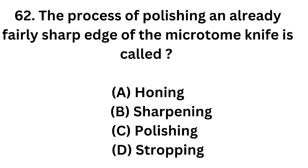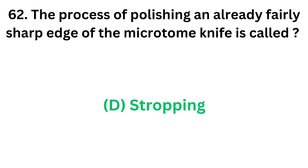Question number 62. The process of polishing an already fairly sharp edge of a microtome knife is called: Option A: Horning. Option B: Sharpening. Option C: Polishing. Option D: Stropping. The correct answer is Option D, Stropping. Polishing an already fairly sharp edge of a microtome knife is called stropping.